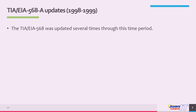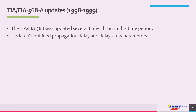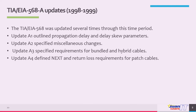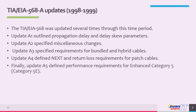The 568A updates from 1998 to 1999 revised the standard several times. Update A1 outlined propagation delay and delay skew parameters. Update A2 specified miscellaneous changes. Update A3 specified requirements for bundled and hybrid cables. Update A4 defined NEXT and return loss requirements for patch cables. Update A5 defined performance requirements for enhanced Category 5, or CAT5E, cable.